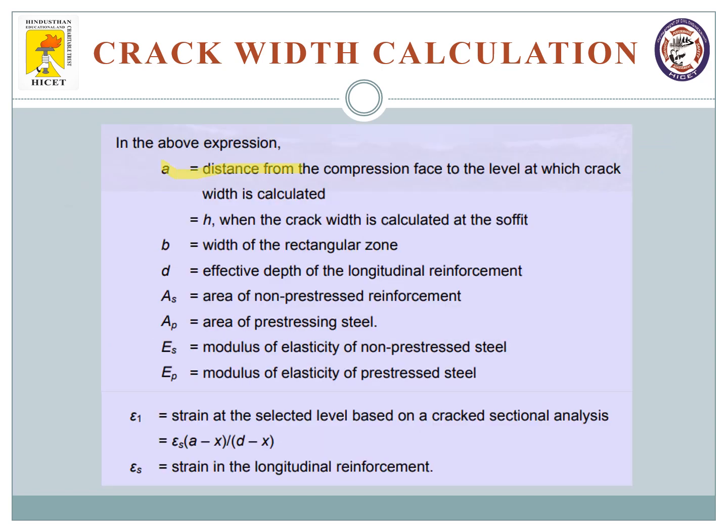Here, a is the distance from the compression face of the level at which the crack is calculated. h is when the crack width is calculated at the soffit, at the bottom. b is the width of the rectangular zone and d is the effective depth of longitudinal reinforcement. As is the area of non-prestressed reinforcement.